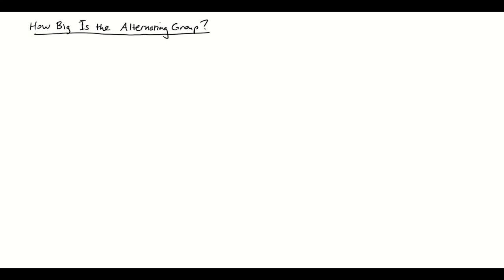In this video, we're going to answer once and for all the question: how big is the alternating group? So, just by way of reintroduction, A sub n, where n is a positive integer, is the alternating group on n elements.